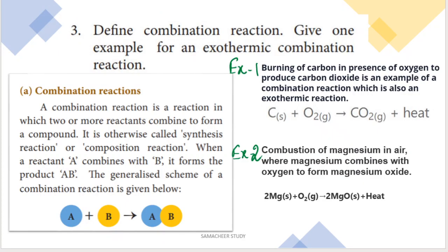Next question: define combination reaction and give one example of an exothermic combination reaction. A combination reaction is a reaction in which two or more reactants combine to form a compound. For example, reactant A and reactant B combine to give compound AB. This is called a combination reaction — also known as a synthetic or composition reaction.